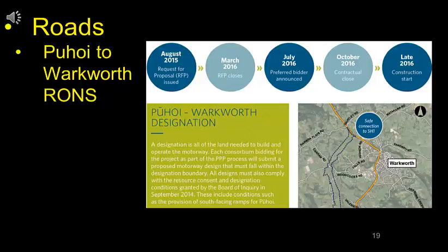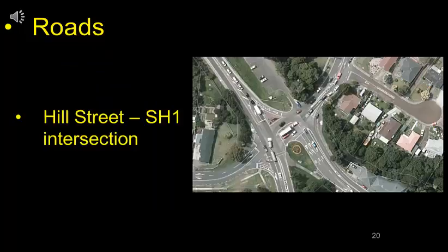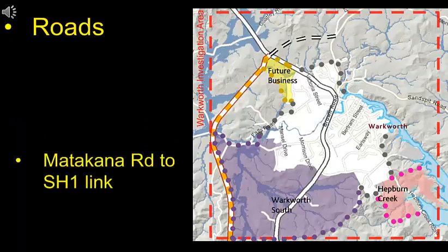Having dealt with wastewater and potable water, let's look at the roads. The Pūhoi to Warkworth Road of National Significance — also called the Expressway or Holiday Highway — is slated for construction start in 2016 with a completion date of 2021, and it is pretty much accepted that this road will happen. The Hill Street–State Highway 1 intersection has been the bane of the Warkworth community for over a decade. $15 million were destined to be spent on fixing congestion there, but it has been put on hold to see what happens to traffic movements following the completed Pūhoi to Warkworth connection. The Matakana Road to State Highway 1 connection is an idea that has been around for a while, costed by Rodney Council and included in the Auckland Council unitary plan process. The dotted line at the top of the picture shows a route the Council considered early on.